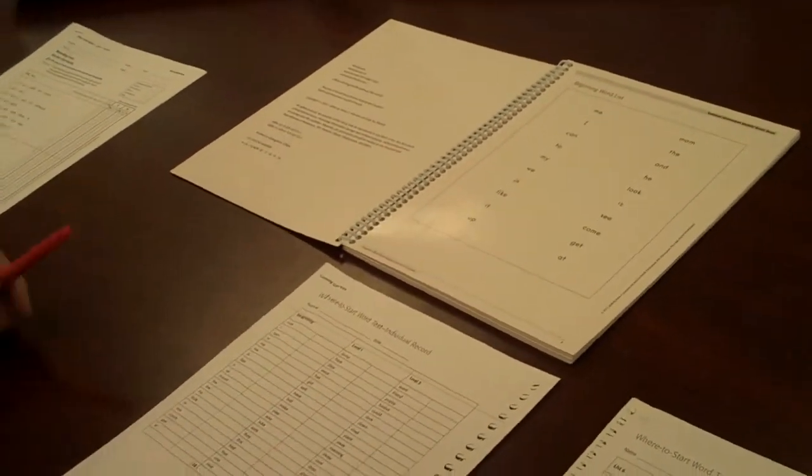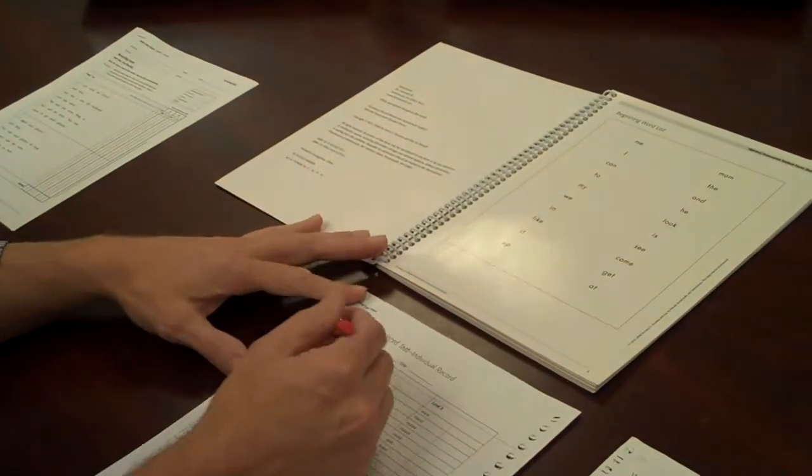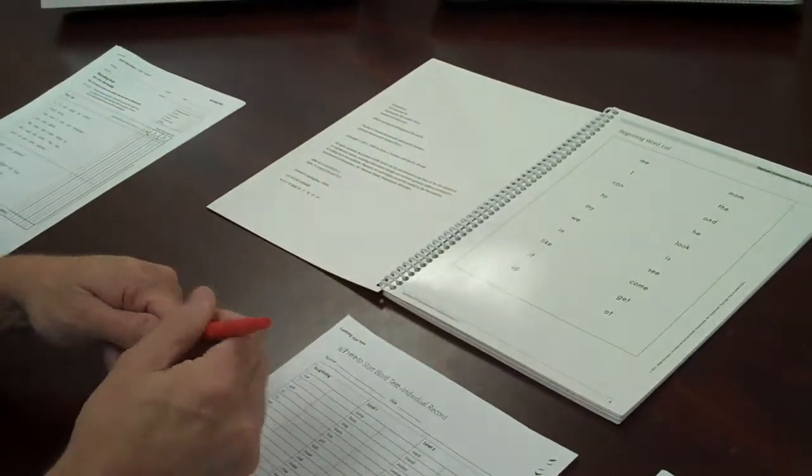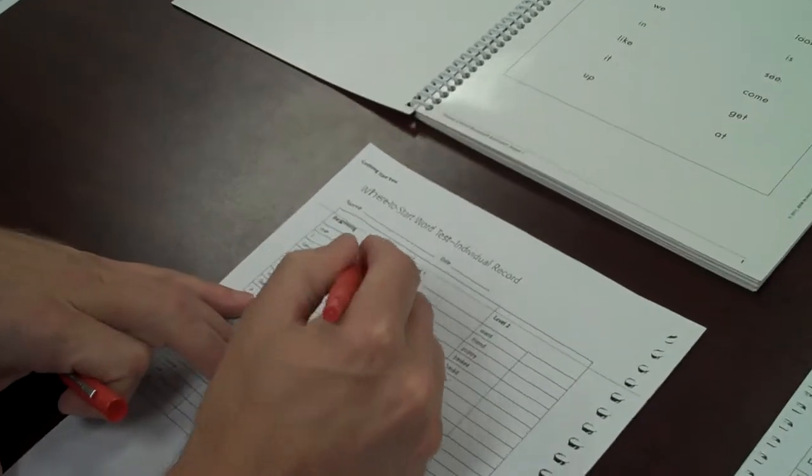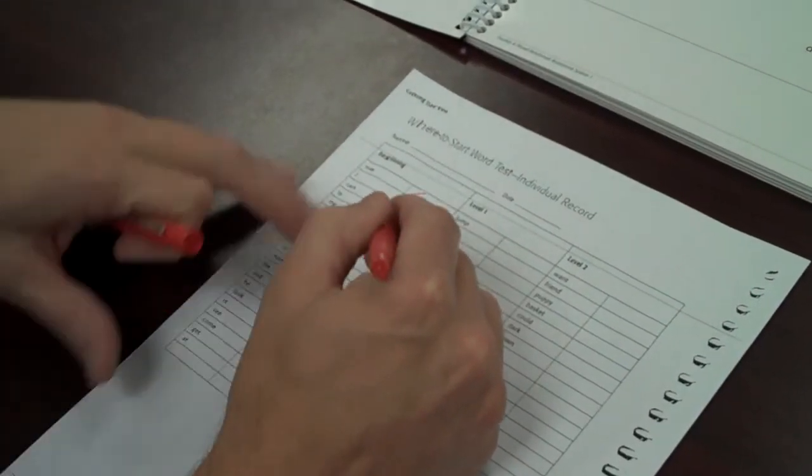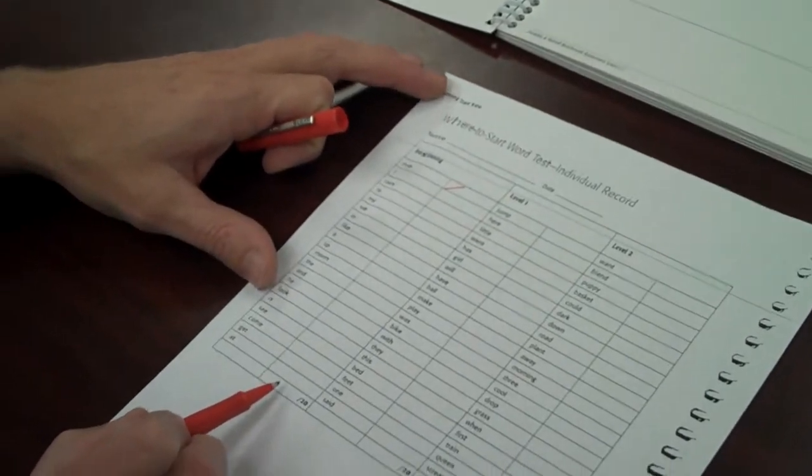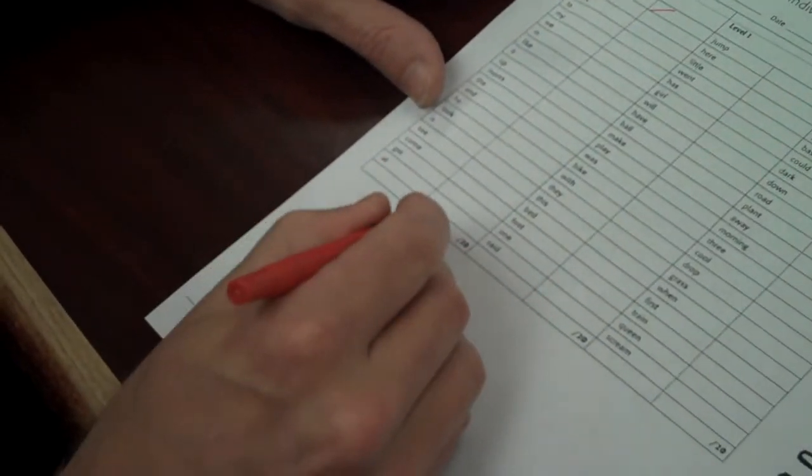So if we were going to begin, I would set the student down and we would begin to read. The student would read, you would mark miss or got it, and then at the bottom here you'd say how many they got correct. So this student got 19 of 20 correct.